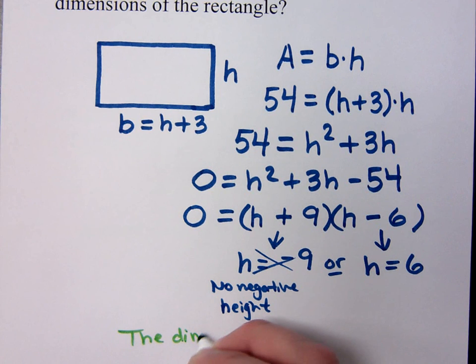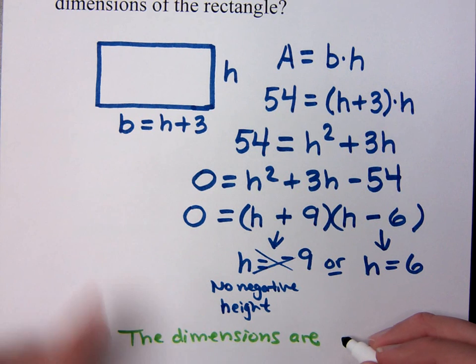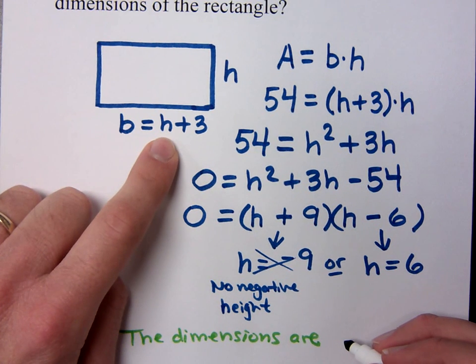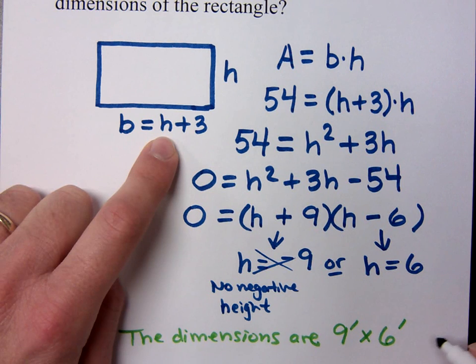Now you can say the width is and the height is, or you can just say this. The dimensions are, what's your base? If H is six, that's going to be nine, so this is going to be nine feet by what's your height? By six feet, right?